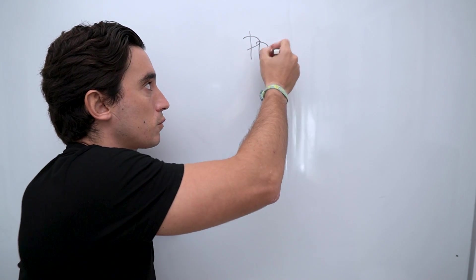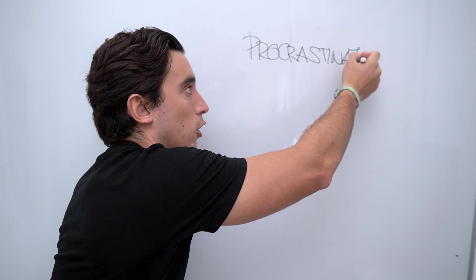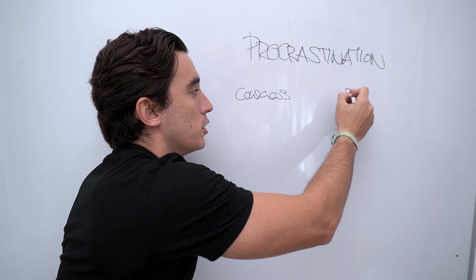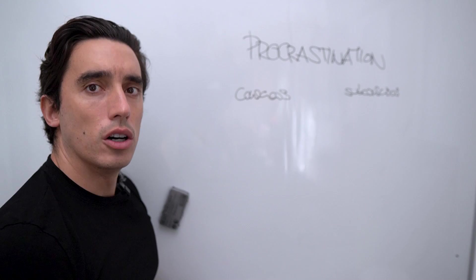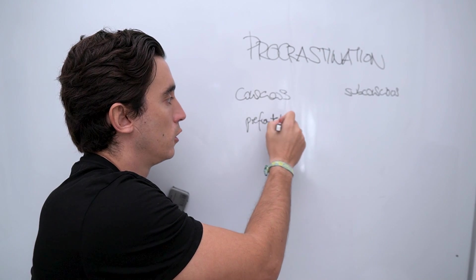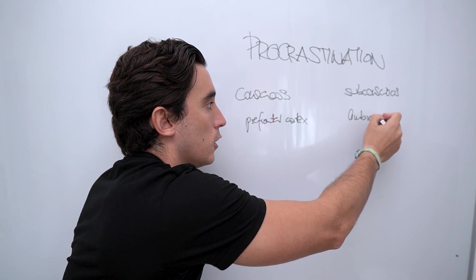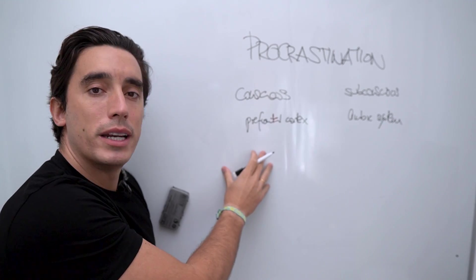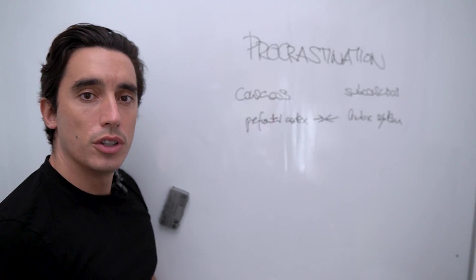So first of all, procrastination is a conflict between two sides of the mind. On one side, you have the conscious mind, and then you have the subconscious. This is the psychological way of discussing two areas of the brain, which is the prefrontal cortex, and then we have the limbic system. And as we've discussed on the channel many times, every performance problem is at the root a mental management problem because it implies there's a conflict in between these two sides of the mind.